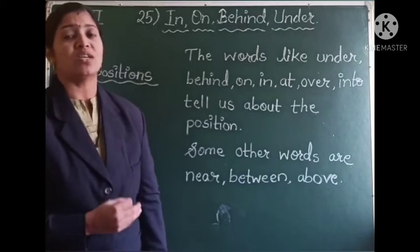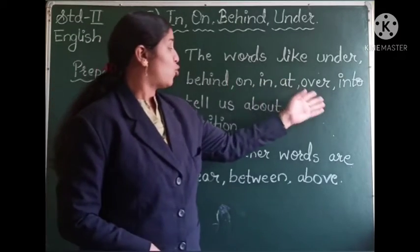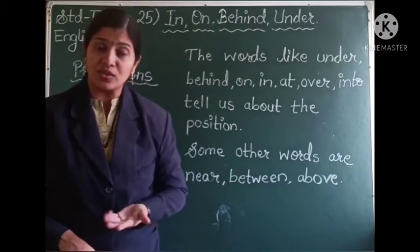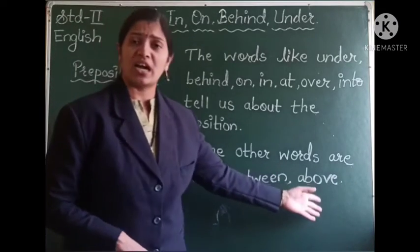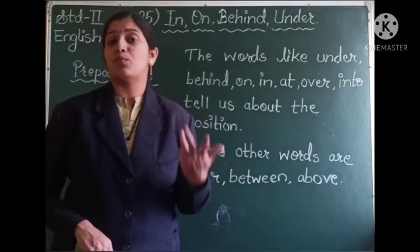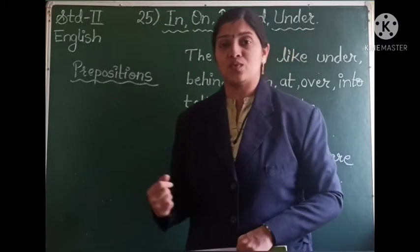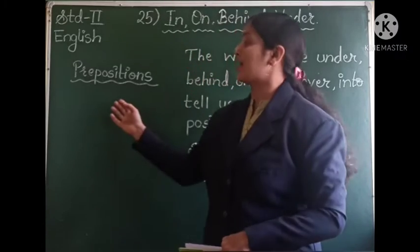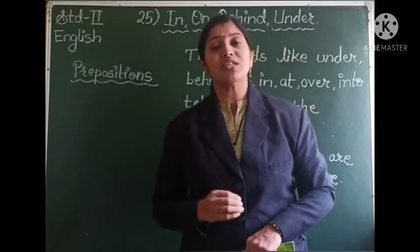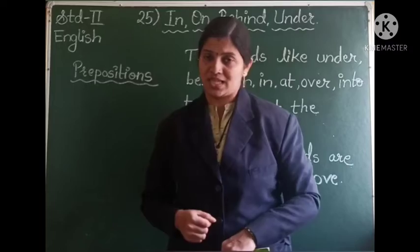So students, all these words like in, on, behind, under, at, over, into — they tell us about the position of something. There are also many other words like near, between, above — all these words tell us about the position of a place, an animal, something, or any human being. So all these words which tell about the position are called prepositions. Yes, prepositions are the words which give us information about the place or position of something.